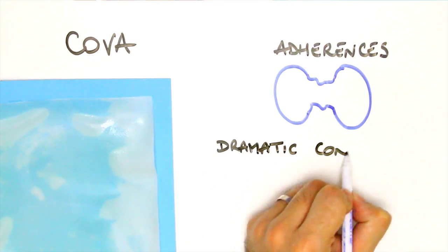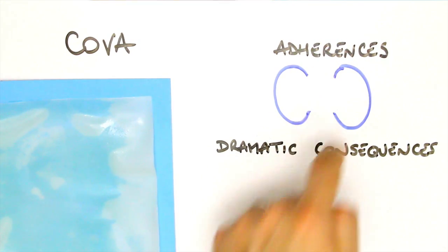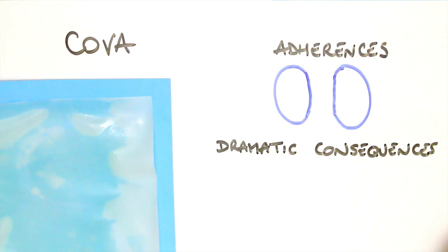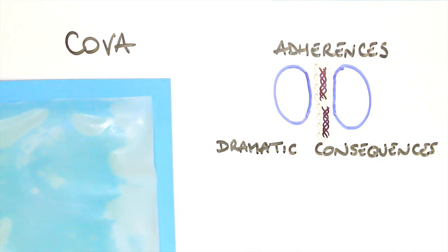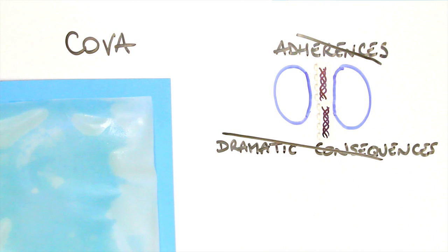and its consequences for the health of the patients can be dramatic. By inserting COVA between the organs or tissues, it provides a physical barrier which guides healing and prevents adherences. This barrier disappears spontaneously within a few months, and the collagen is naturally metabolized by the body.